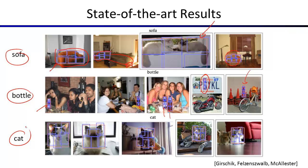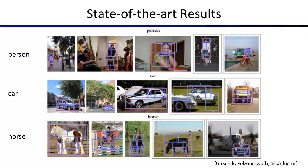Cats are another popular category — partly because there are lots of images available online to use as training data. Person detection is really important — think of self-driving cars. One of the most important challenges is understanding when a car is seeing a person and not hitting them. In fact, the HOG descriptor was invented initially specifically to build a better pedestrian detector. Since then it's been used for much more. The results show some people missed, but most found, including a person on a motorcycle.